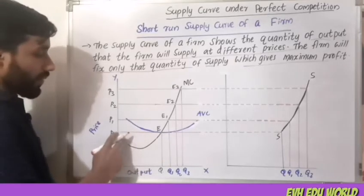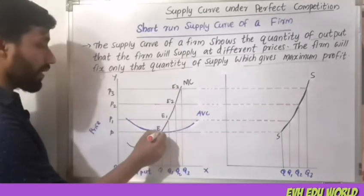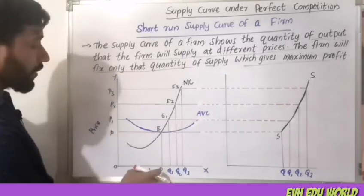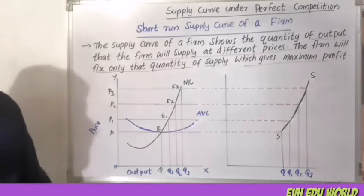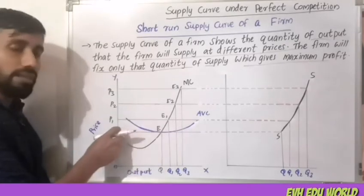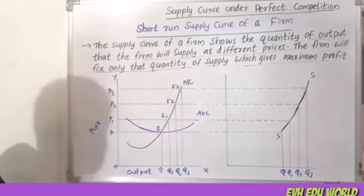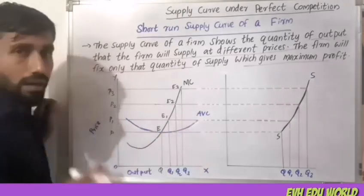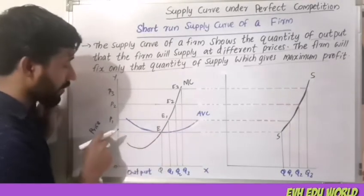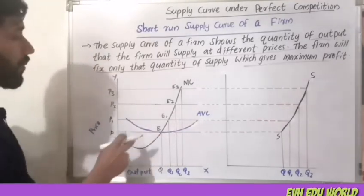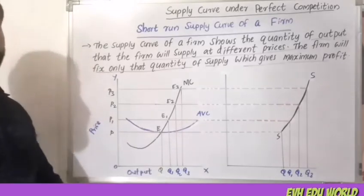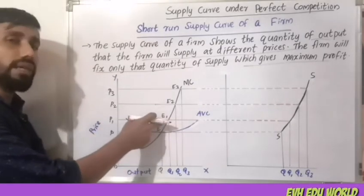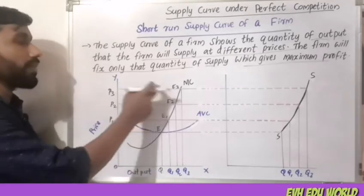The equilibrium point is where price equals MC. At the equilibrium point, we get the price, the earnings curve, the average cost, and the average variable cost. If P1, equilibrium point is E1; if P2, E2; if P3, E3.